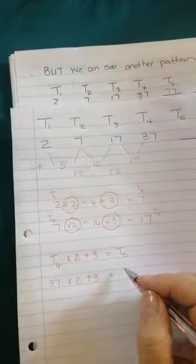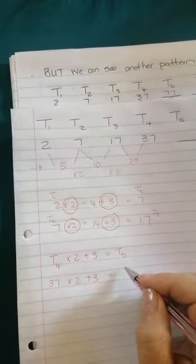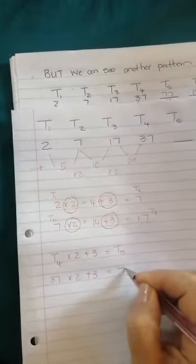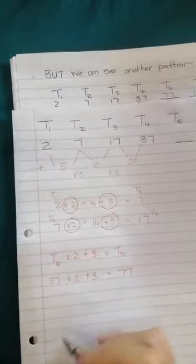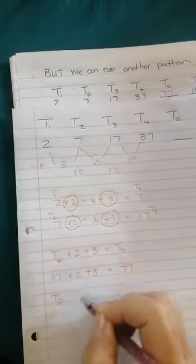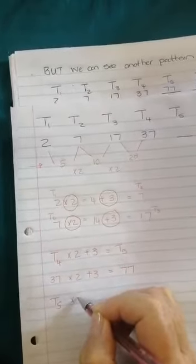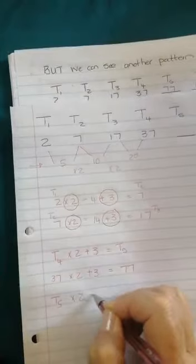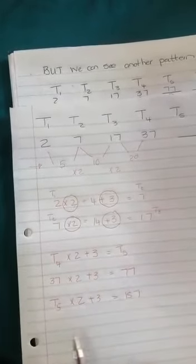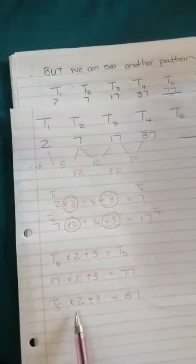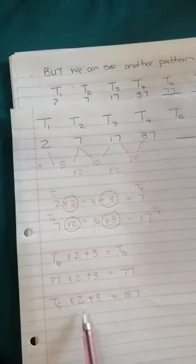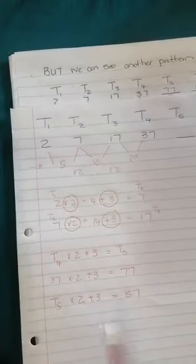37 times 2 is 74, plus 3 is 77. And then if I take term 5, and I multiply it with 2, and I add 3, I will get 157. 77 times 2 is 154, plus 3 is 157.